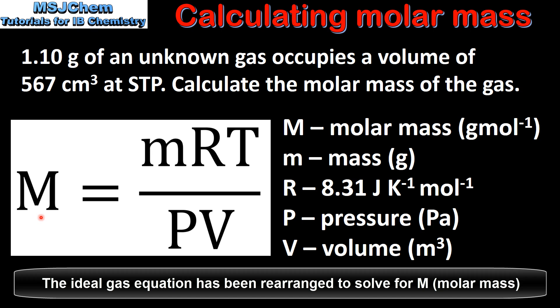To solve this we'll use the equation molar mass equals mRT divided by PV. M is molar mass in grams per mole, small m is mass in grams, R is the universal gas constant, P is the pressure in Pascals, and V is the volume in meters cubed.